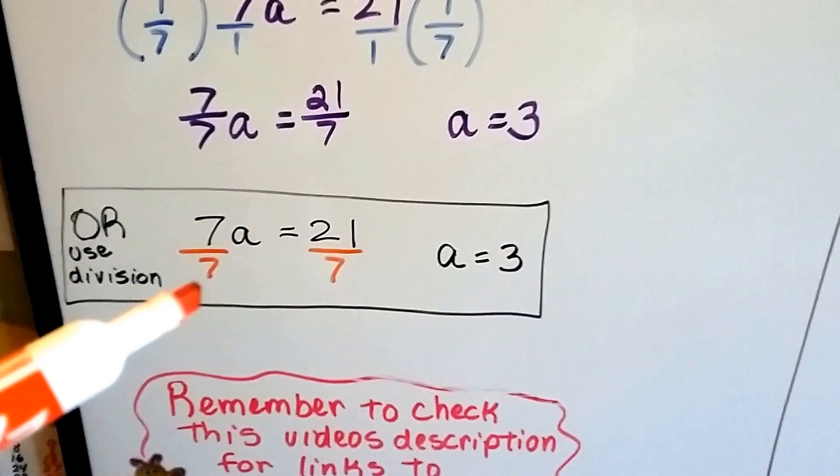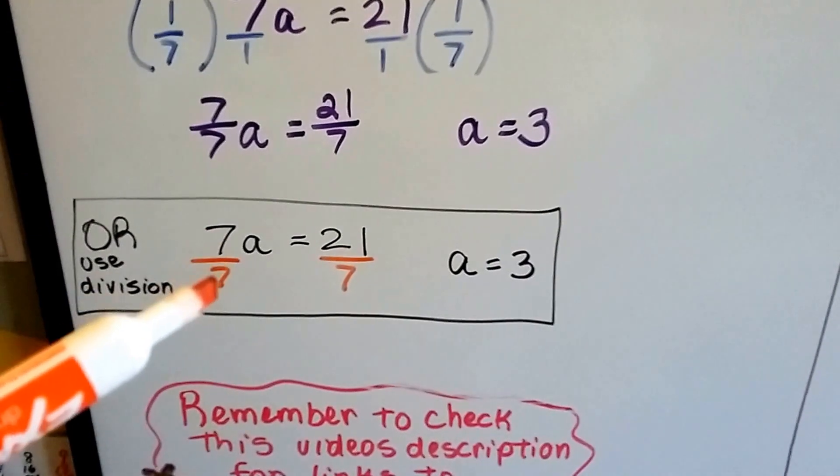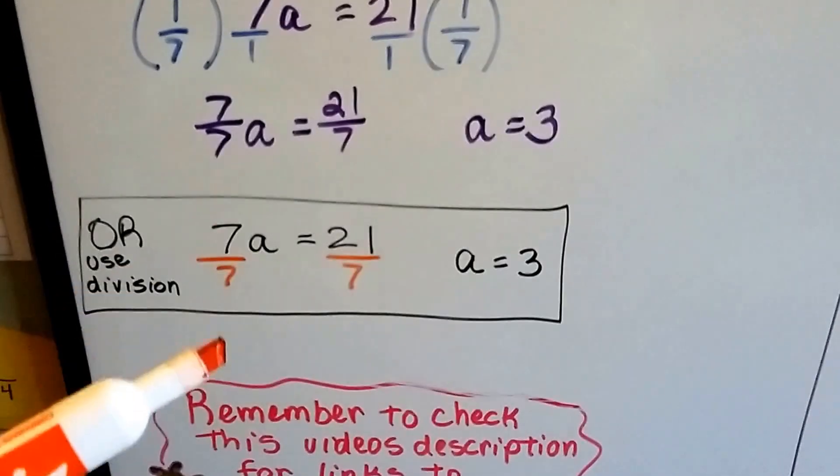If you saw the last video, you saw that we can also skip some steps and just use division. Instead of using the reciprocal, we can just divide both sides by the coefficient, the 7.